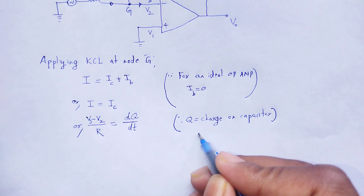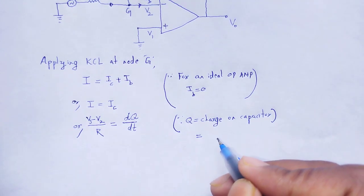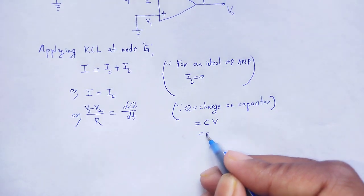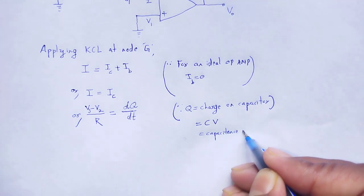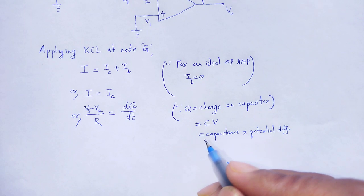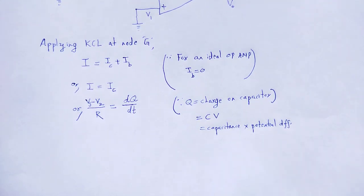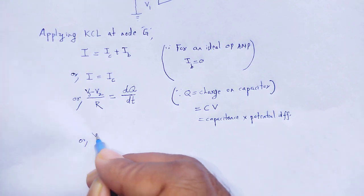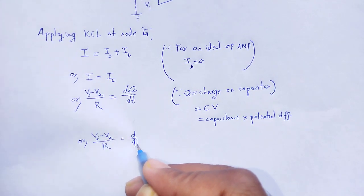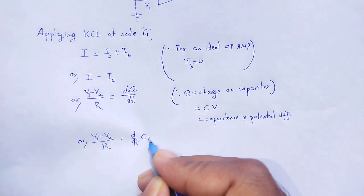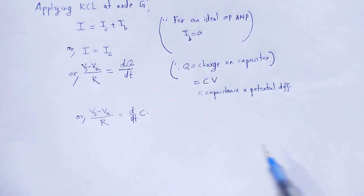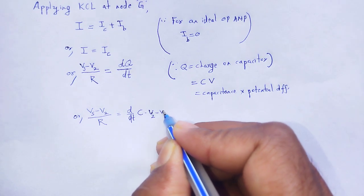And Q is equal to C times V, that is capacitance into potential difference. So the capacitor current becomes C times d/dt of the potential difference across the capacitor. The potential difference from V2 to V0 is V2 minus V0. Therefore: (Vs minus V2) divided by R is equal to C times d/dt of (V2 minus V0).